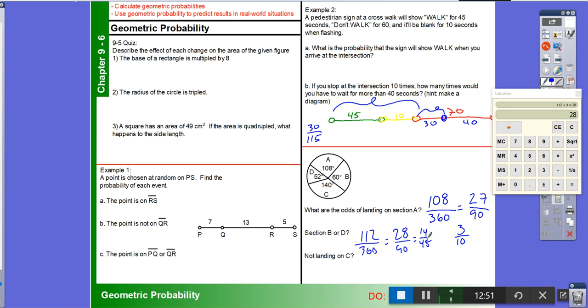And then not landing on C. C is 140. 360 minus 140 is going to be 210. So 210 out of 360. And again, we're going to reduce. So that's 21 over 36. 3 goes into both of them. So that's 7/12 of the time.